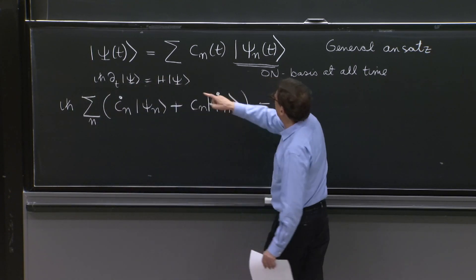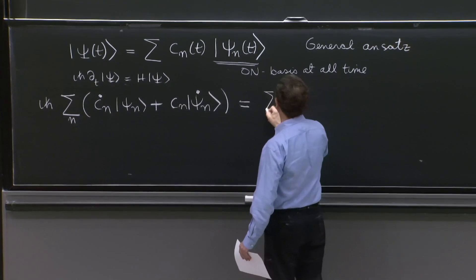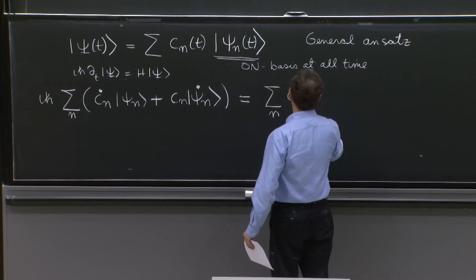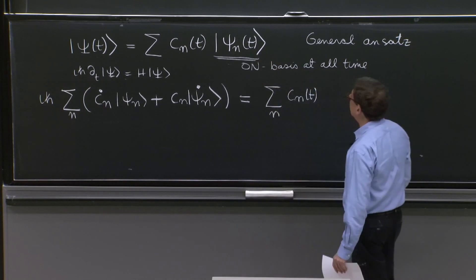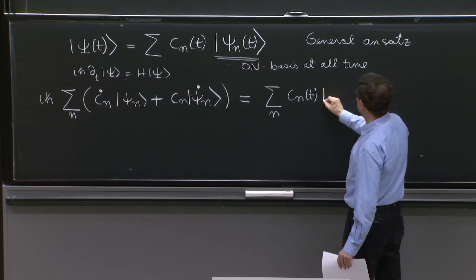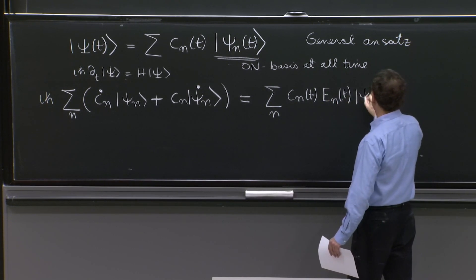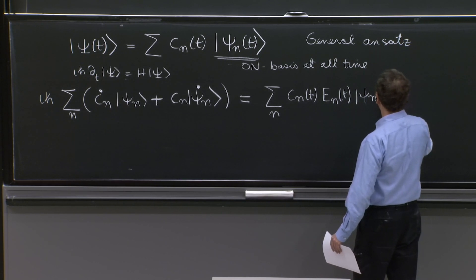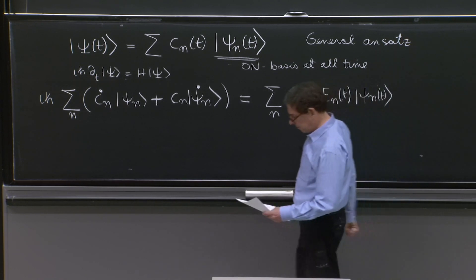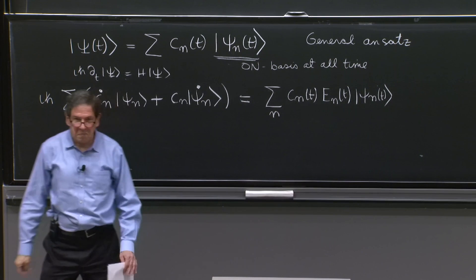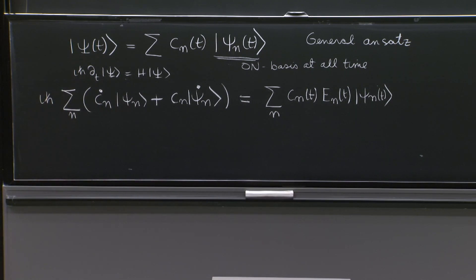It's equal to h psi, this is the sum over n, cn of t, h psi n is equal to en of t psi n of t. OK, so that's your equation.